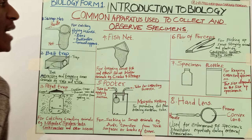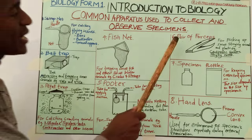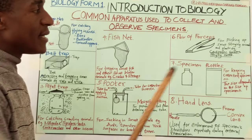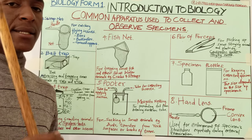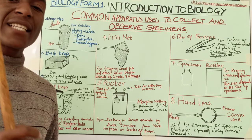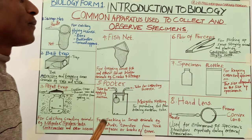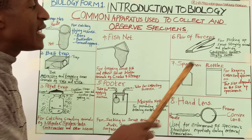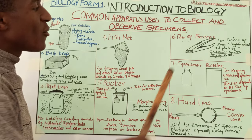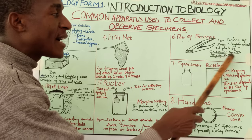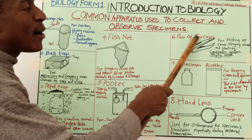Number six, we have a pair of forceps. This one is not for collection as such, but it is an apparatus used for picking small stinging animals and plants. When you are handling injurious or dangerous specimens that can injure you, you use a pair of forceps to pick them. Examples include centipedes, which are injurious, spiders, which are poisonous, and stinging nettle, which is an example of a plant.